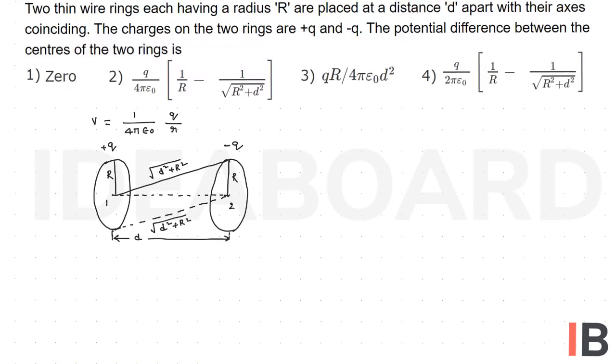Now let us consider V₁ first. V₁ which is equal to potential due to the first ring. This is 1 by 4πε₀ into q by r minus q due to the second ring by √(d² + r²).